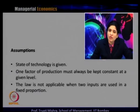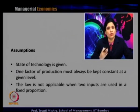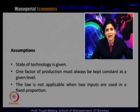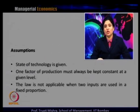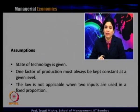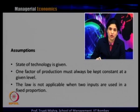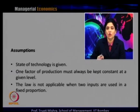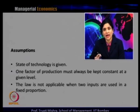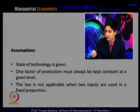There are a few assumptions for the law of diminishing returns: the state of technology is given; one factor of production must always be kept constant at a given level (K must be constant, only labour changes); and the law is not applicable when two inputs are used in fixed proportion. If you were to buy one more photocopier machine while still using two units of labour, total product would increase — but that cannot happen in the short run because one input must remain fixed.